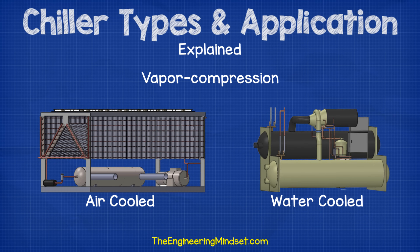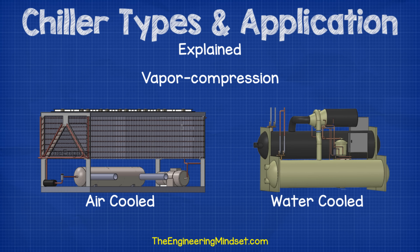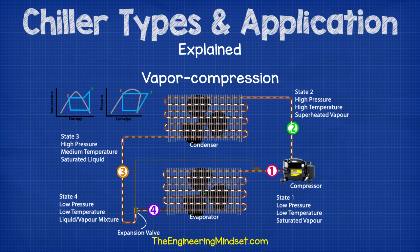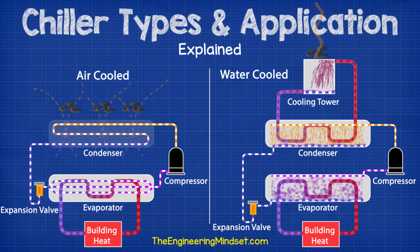Coming back to vapor compression chillers, the two main types are air-cooled and water-cooled. Both types have the same essential components: the evaporator, the compressor, the condenser, and the expansion valve. The difference is how unwanted heat is ejected via the condenser. With an air-cooled chiller, fans force air across the exposed tubes of the condenser to carry the heat away. With a water-cooled chiller, the condenser is sealed and water is pumped through it to take the heat away and disperse it through a cooling tower, which also uses a fan.